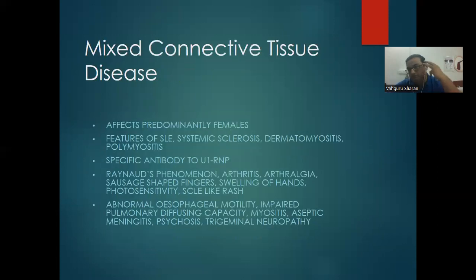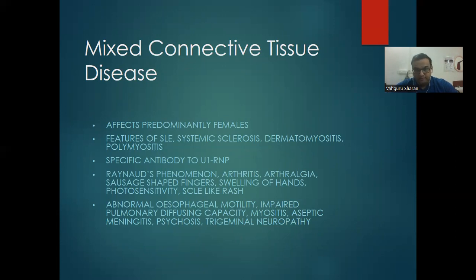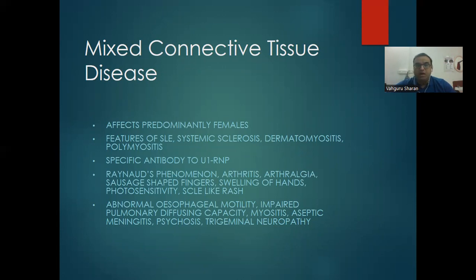MCTD (Mixed Connective Tissue Disease) predominantly involves females with features of SLE, scleroderma, dermatomyositis, and polymyositis all in one. The specific antibody is anti-U1-RNP. Features include Raynaud's phenomenon, arthritis, arthralgia, sausage fingers, swelling of hands, photosensitivity, SLE-like rash, abnormal esophageal motility, impaired pulmonary diffusion capacity, myositis, aseptic meningitis, psychosis, and trigeminal neuropathy.